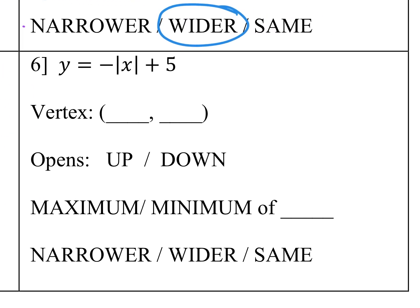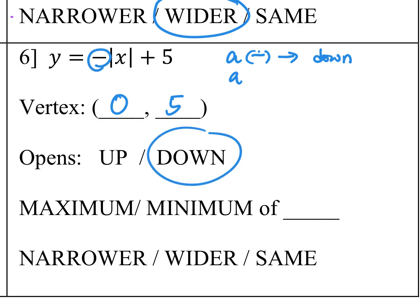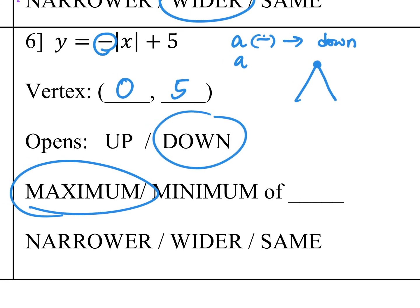Number 6: Y is equal to negative absolute value of X plus 5. A is negative, so the graph opens downward. The absolute value of A is only 1, so it will have the same shape as the parent function. The vertex is located at 0 and 5. It opens down because of the negative, so the vertex is at its maximum with a maximum value of 5 when X equals 0. A equals 1, so same shape as the parent function.